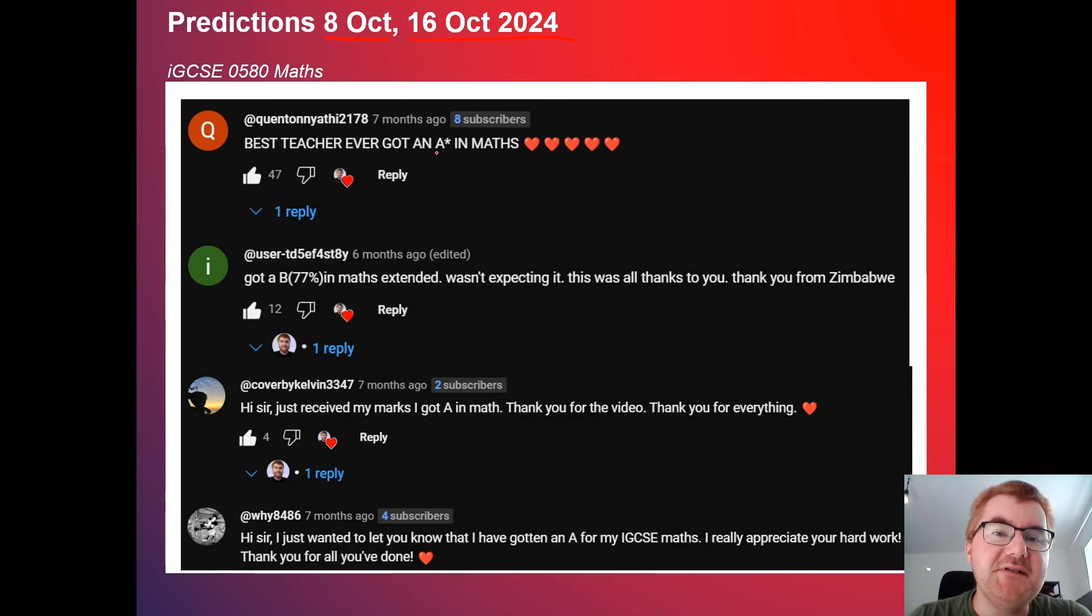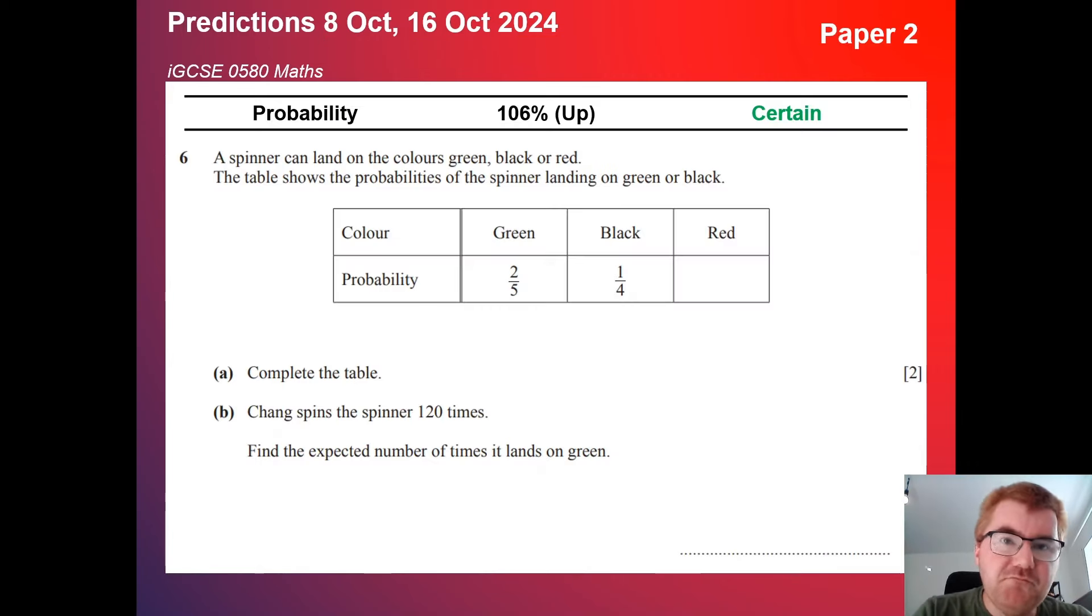Now I thought I'd share from my previous prediction video some of the comments that I had. You can see here Quentin got himself an A star in maths using the prediction video, so really well done to him. We've got our friend here from Zimbabwe gaining 77% or a B on the maths extended. This person here, Kelvin got A in maths, so well done on him as well and got an A down here as well. So these predictions, I've been doing these now for a couple of years, they've been very useful to previous student cohorts and hopefully by taking the information in this packed video, you can get that information you need to get those top grades.